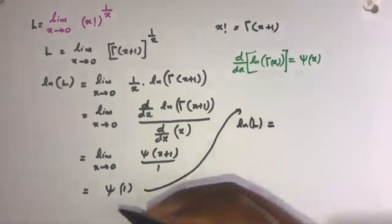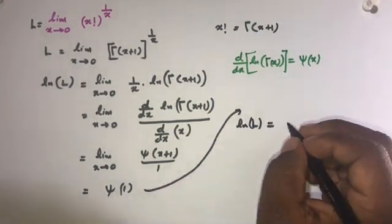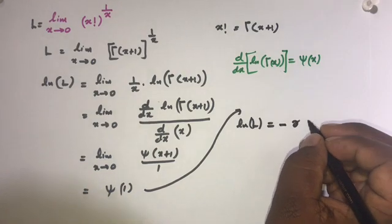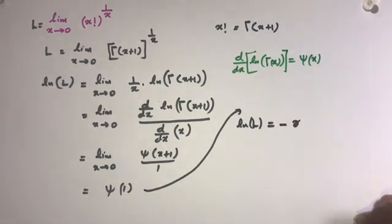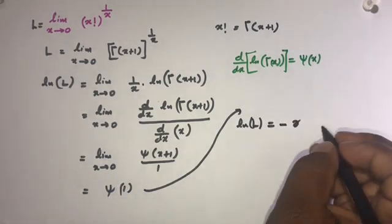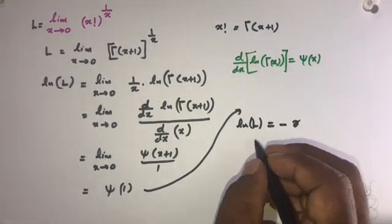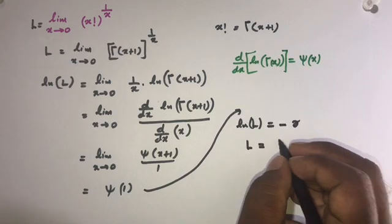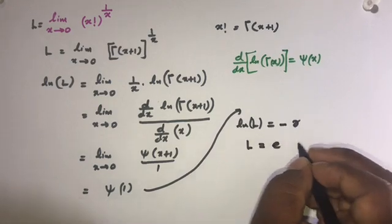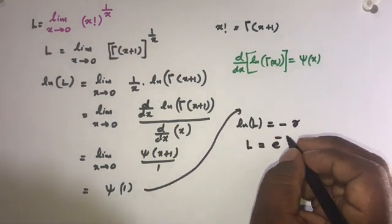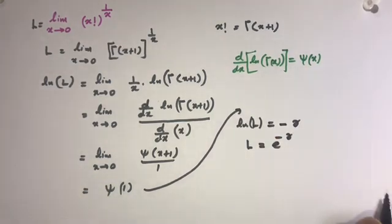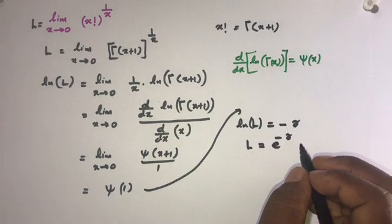So natural log of L is equal to digamma of 1. We know digamma of 1 is equal to negative gamma, the Euler-Mascheroni constant.